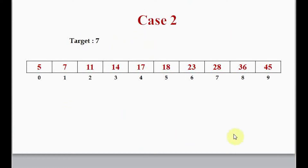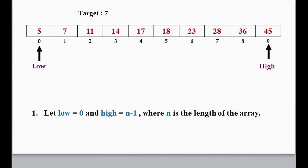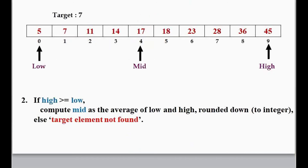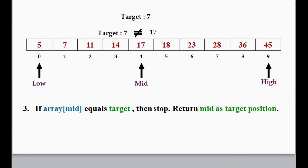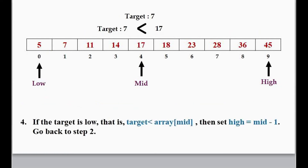For case 2, the target element is 7, which is less than the mid element. The first steps are the same — set low and high, then compute mid. Now we check if array[mid] equals target: no, that is not the case. So we check the next condition: if target is less than array[mid] — yes, 7 is less than 17. So we set high equal to mid minus 1; mid is 4, so high becomes 3.